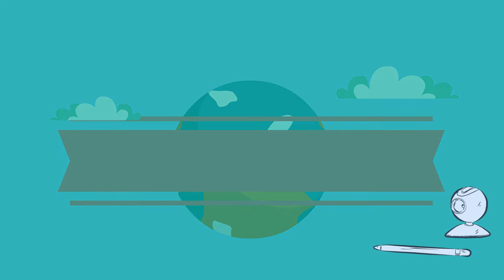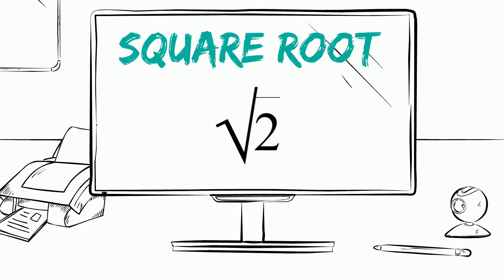Welcome to Moo Moo Math and Science and the square root of 2. Two is not a perfect square. This means that there is not a whole number multiplied by itself which will equal 2.